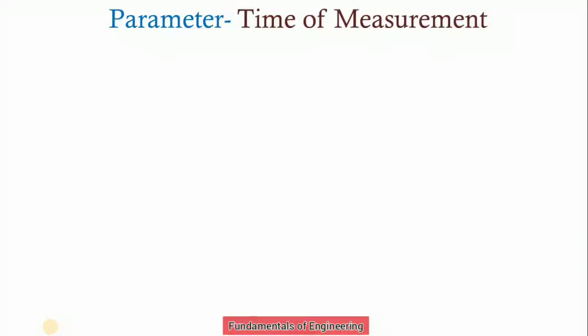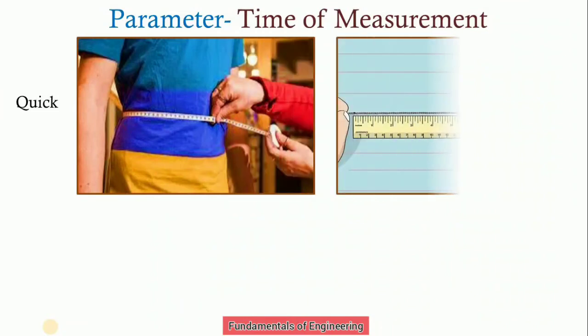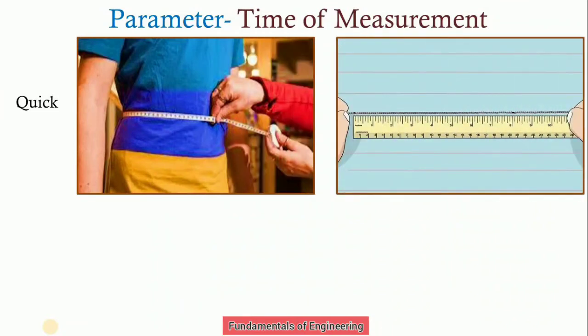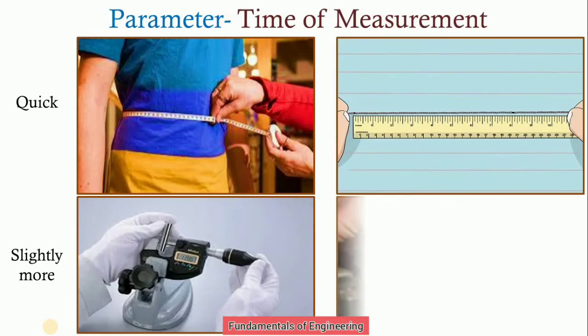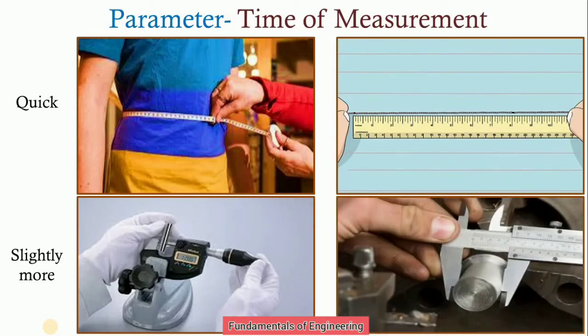Now time of measurement. If we consider line standard, time for measurement is quick. We can measure dimensions quickly using line standard. But if you consider end standard, it requires slightly more time because we have to measure two scales. If you consider vernier and micrometer, we have to measure the two scales, then we have to multiply with the least count to calculate the total value of a distance. That's why the time required is more in end standard.